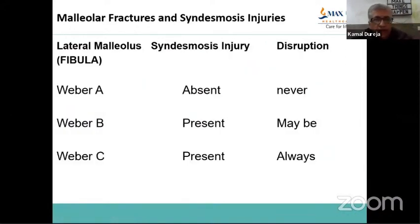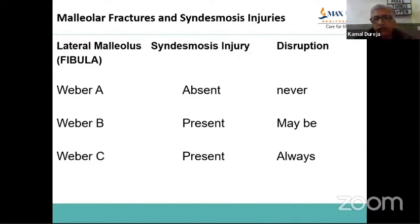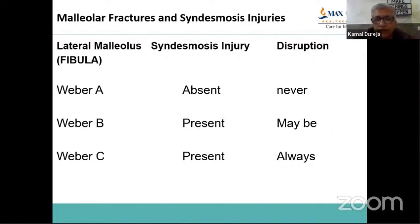To summarize: malleolar fractures are combined with syndesmosis injuries. In Weber type A, which are below the ankle joint level, syndesmosis injury is never seen. In Weber type B, it may or may not be present — it will be present in stage 3 and 4, but not in stage 2. In Weber C, which are suprasyndesmotic fibular fractures, syndesmosis injury will always be present. Plan your surgery accordingly. This gives insight into how to analyze your X-rays for malleoli and syndesmosis disruption.